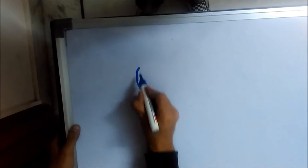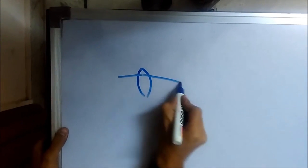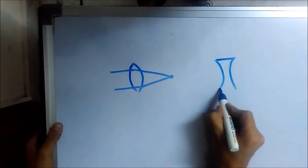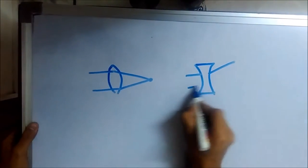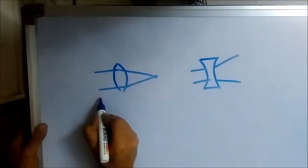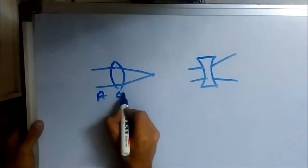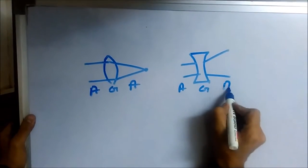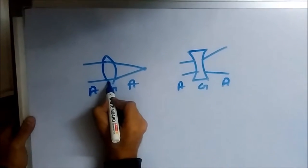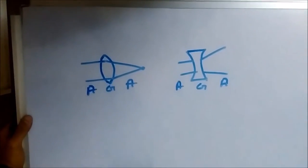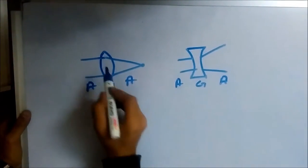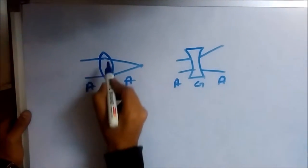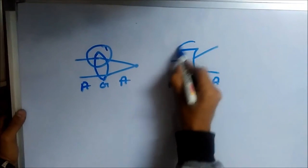In the converging case the rays were bending and meeting at a certain point, and in the diverging case the rays were spreading apart. But why is this happening? In both cases it's air to glass to air — so why the difference? Throughout this video we've stressed that the curvature is different: in one case the curvature bulges outward, and in the other the curvature bulges inward. Let's see what is actually happening in both cases.